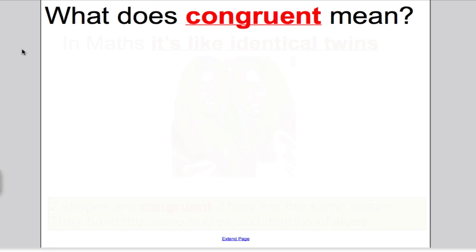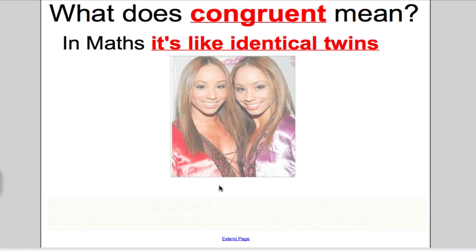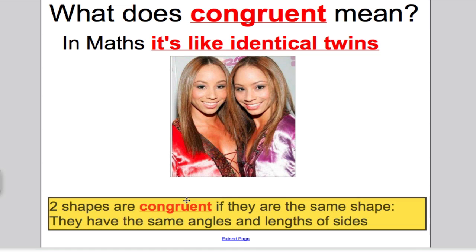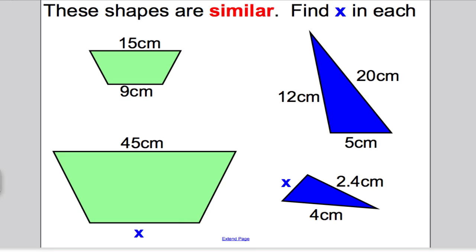Taking that one step further, that means if two shapes are similar, the angles inside all the shapes are equal, and the lengths of the sides are related by a scale factor of enlargement. Just before we move on, I want to point out what congruent means. Congruent in maths is a bit like what identical twins are, something that looks identical to each other. In that case, the shapes are exactly the same and have the same angles and lengths.